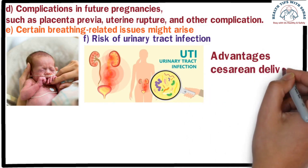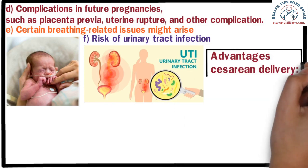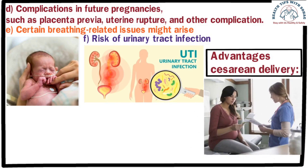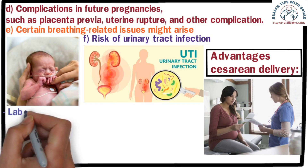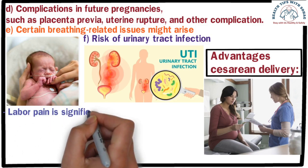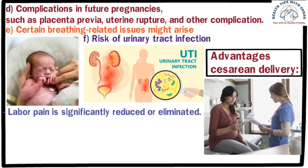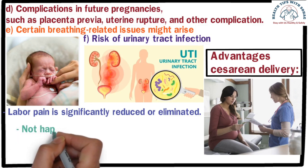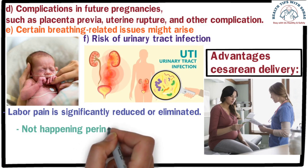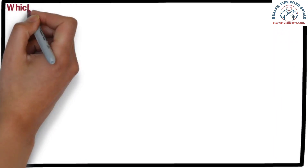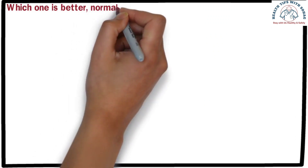However, caesarean delivery also has some advantages. Number one: planning can be done in advance for the delivery, allowing awareness and preparation to deal with unforeseen issues. Number two: since caesarean delivery involves surgical intervention, labor pain is significantly reduced or eliminated. Number three: perineal tears that can occur during normal delivery will not happen in the case of caesarean delivery. So those were the advantages and disadvantages of both normal and caesarean deliveries.